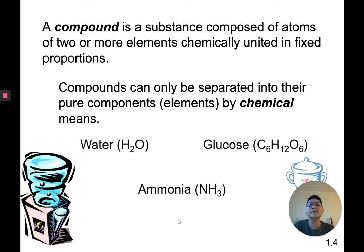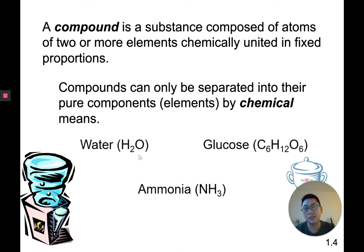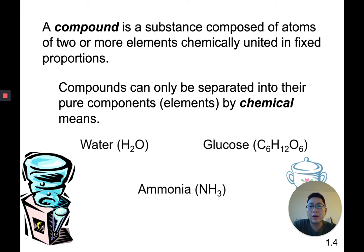A compound is a substance composed of atoms of two or more different elements, chemically united in fixed proportions. Compounds can only be separated into their pure components by chemical means. Examples: water H₂O, glucose C₆H₁₂O₆, ammonia NH₃. Water is always two hydrogens for every oxygen — if you have H₂O₂, that's no longer water, that's hydrogen peroxide. Just like changing letters in a word makes a different word, changing proportions makes a different compound.